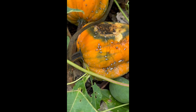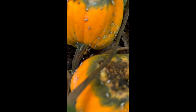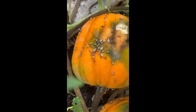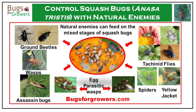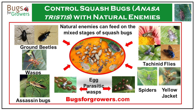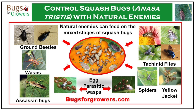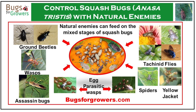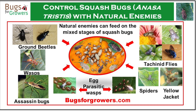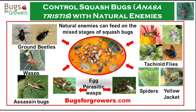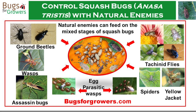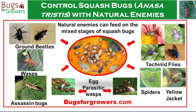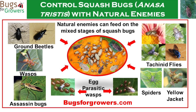Additionally, they can transmit disease-causing pathogens from plant to plant, further increasing the damage. Therefore, managing squash bugs is crucial for protecting cucurbit crops. However, the use of toxic chemical pesticides should be avoided due to their harmful effects on human health and the environment.